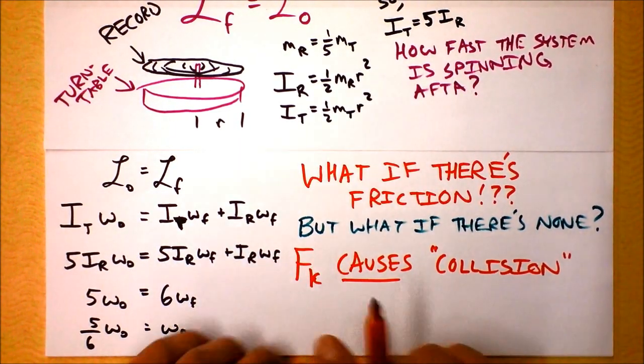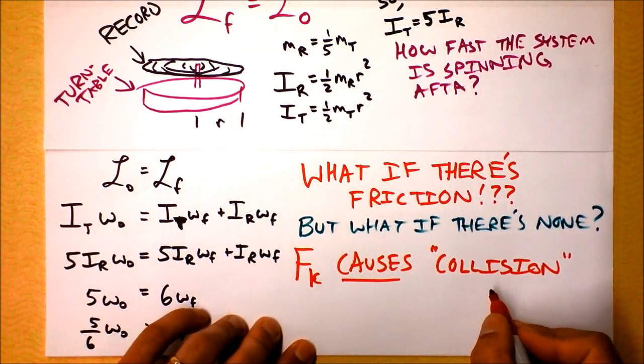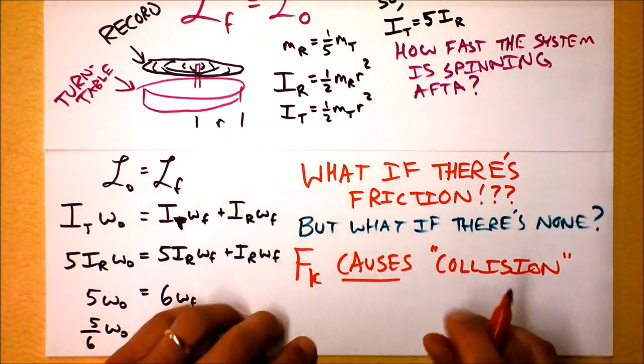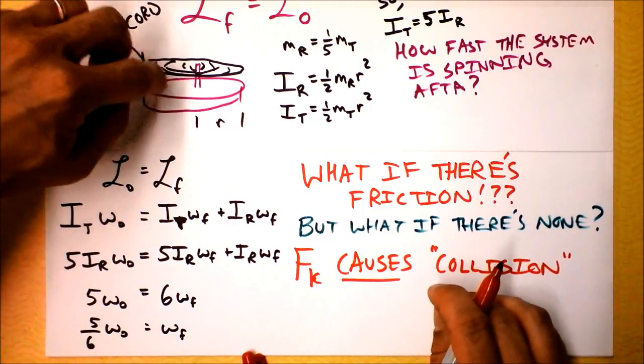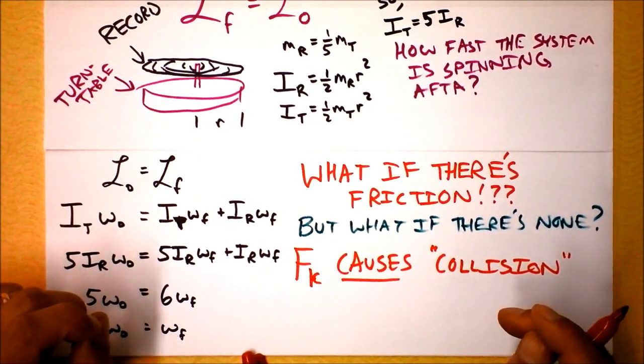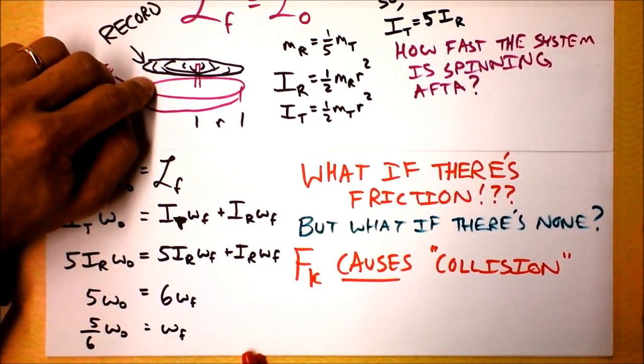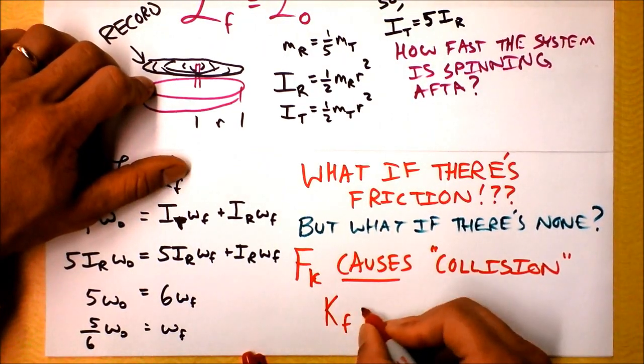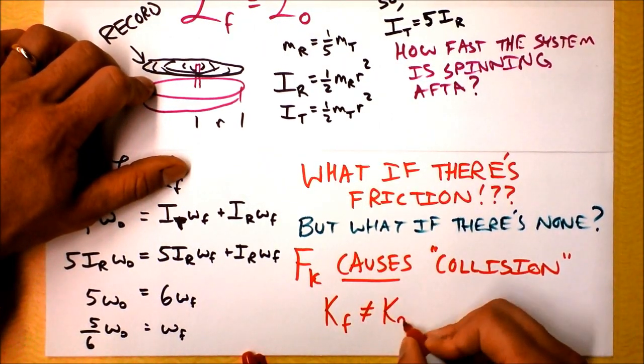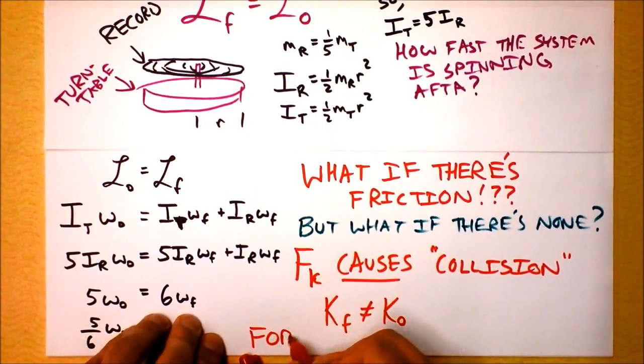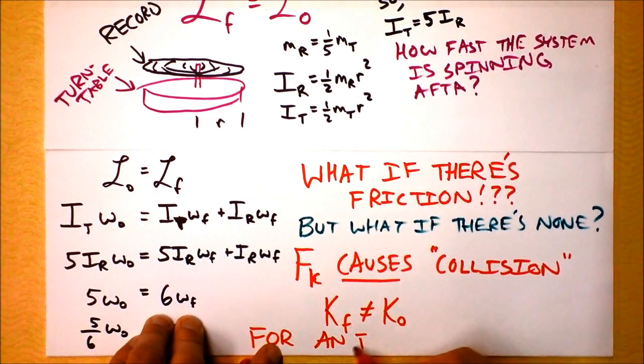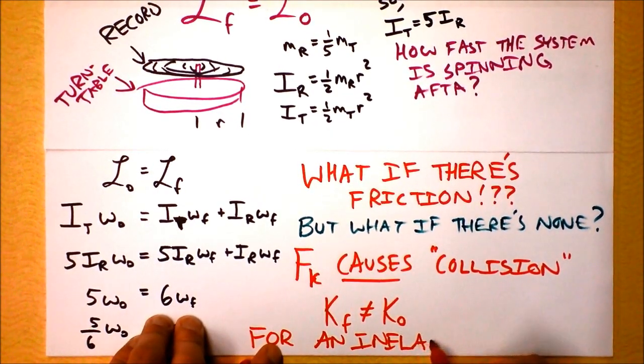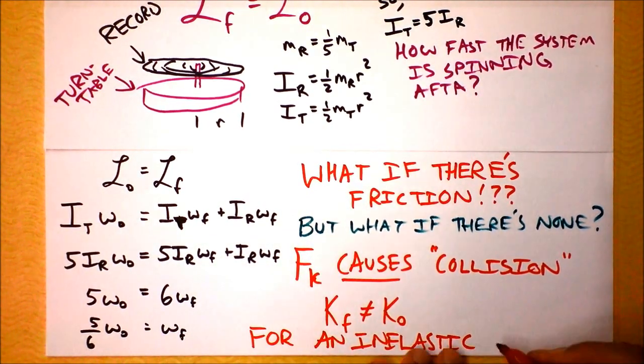And that is interesting because the force of kinetic friction is actually doing work. It's causing the energy of the system to leave the system as heat. And that's consistent with the fact that k-final is not k-initial for an inelastic collision. We already argue that this is not an elastic collision. It's an inelastic collision.